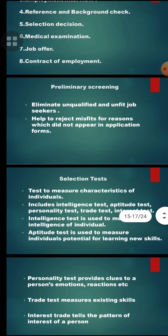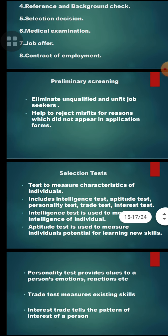The second one is selection tests — tests used to measure the characteristics of individuals. They include intelligent test, aptitude test, personality test, trait test, and interest test. The intelligent test is used to measure the intelligence of individuals. In this selection test, there are five tests. One particular individual test conducted is the intelligent test.